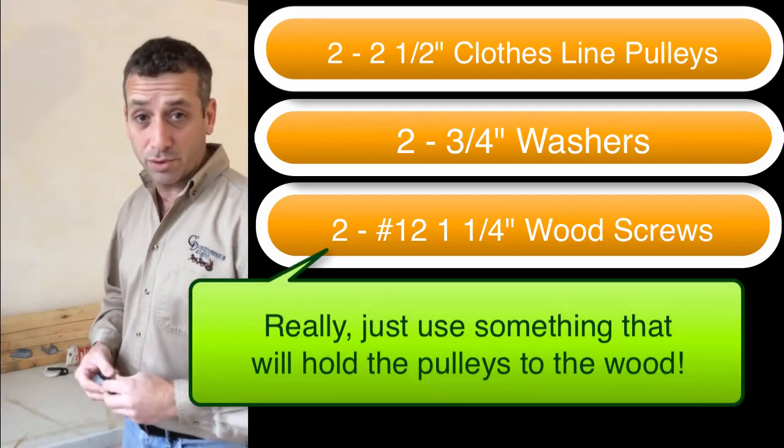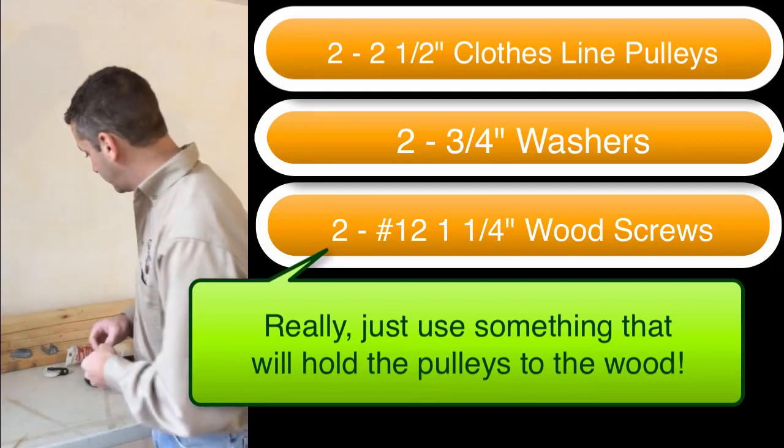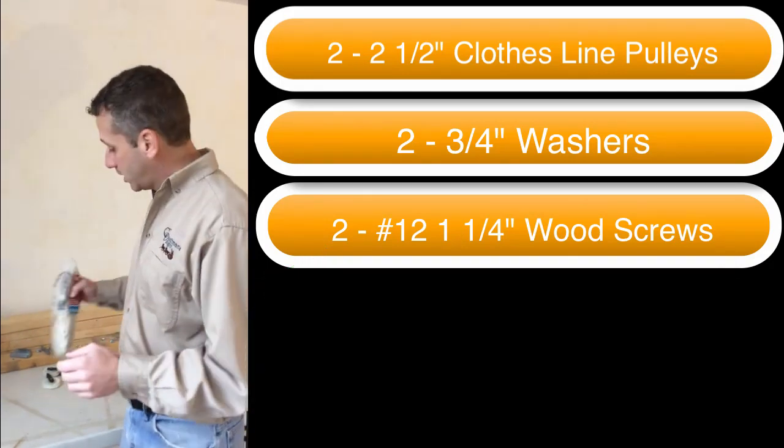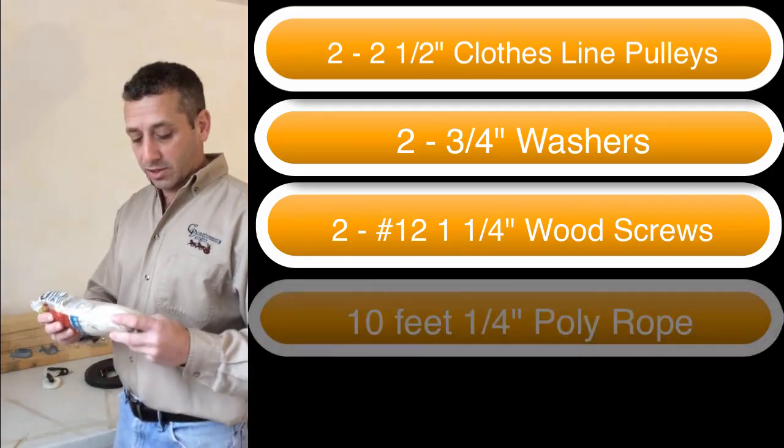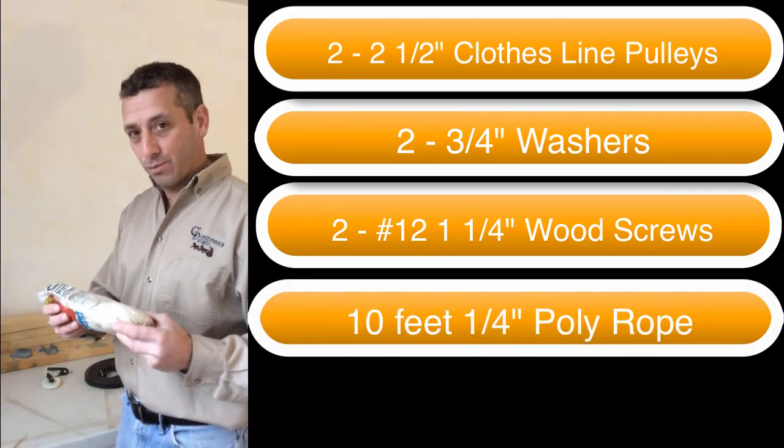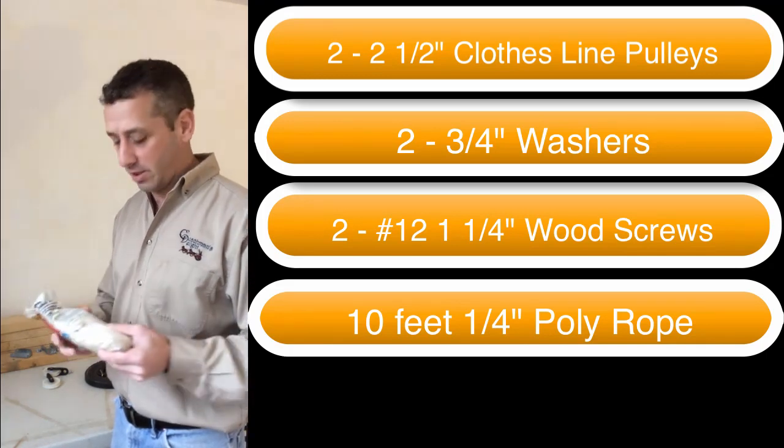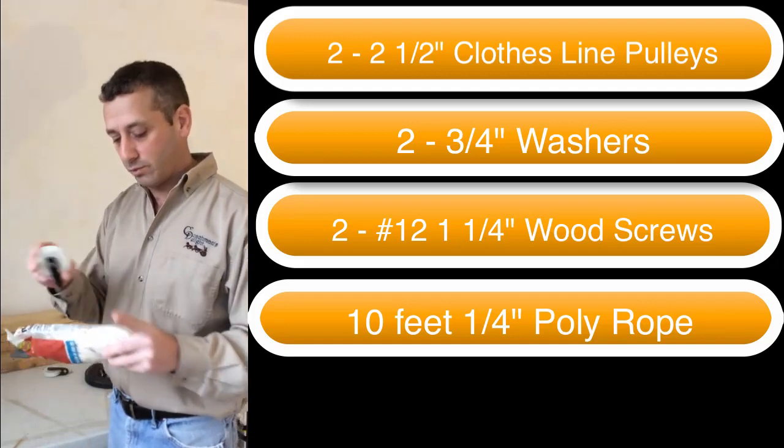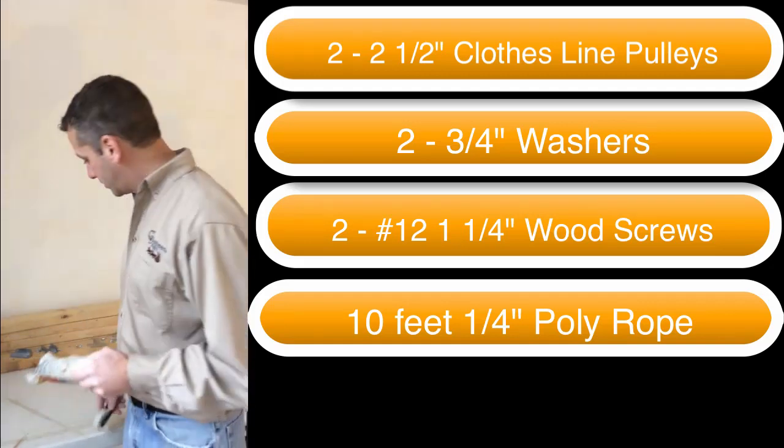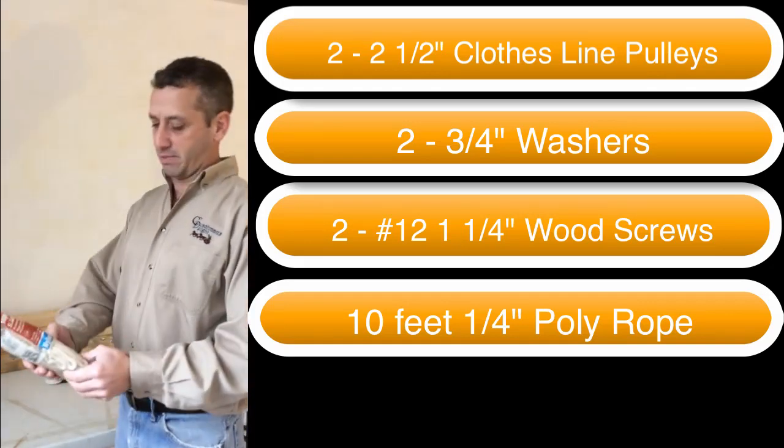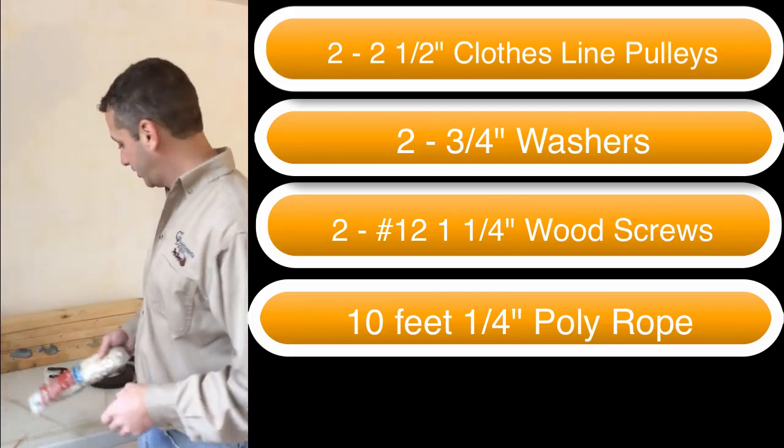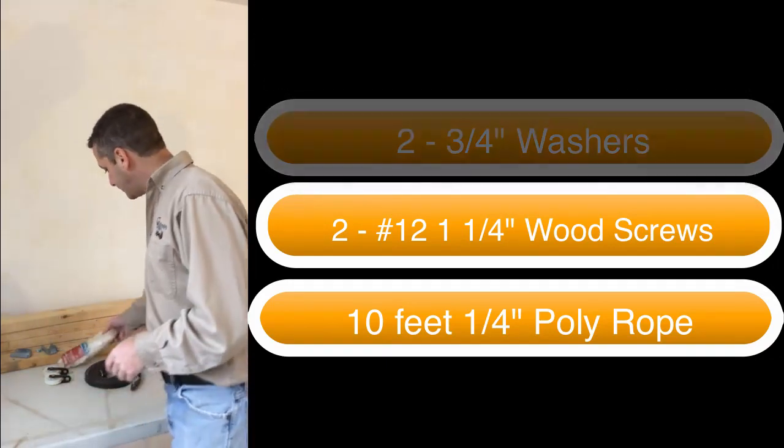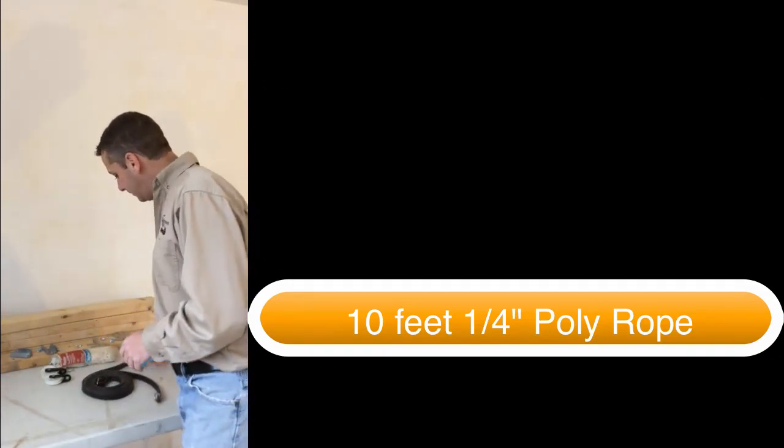The next thing we're going to need is something to hang the weight. This is quarter-inch nylon braided rope. You could use just about any rope. It doesn't have to be exactly a quarter inch, but that fits the groove of this pulley really nicely, so that's a good size. This bag's got 50 feet in it. That's way more than we're going to need for today's project, so probably just about 10 or 12 feet of rope, not even.